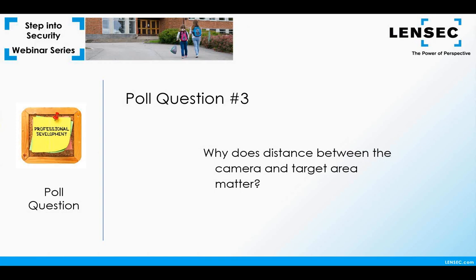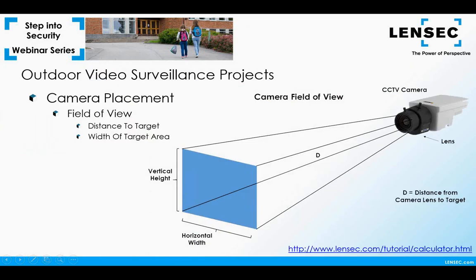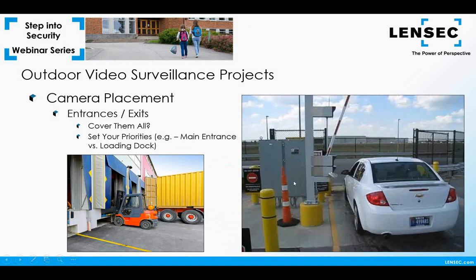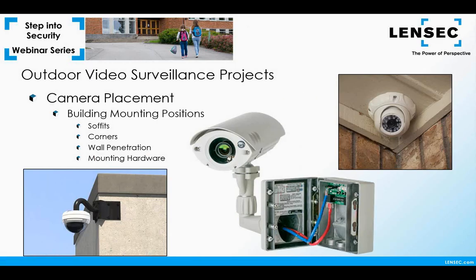If you've been on previous webinars, you've had a preview of these fundamentals — we've discussed field of view, focal length, and pixels per foot. This is a typical idea of a camera field of view. You're looking at the distance between the camera and the target area versus the area that you want to see, and calculating that helps you determine what proper lens to use for your camera. You'll want to take a look at the vertical height and horizontal width of the area desired — there's a formula for calculating that, but it's much easier to use the online calculator included.